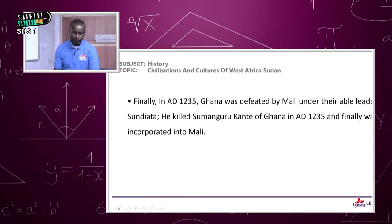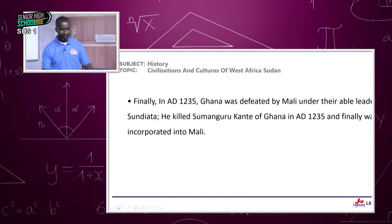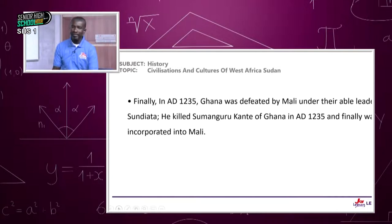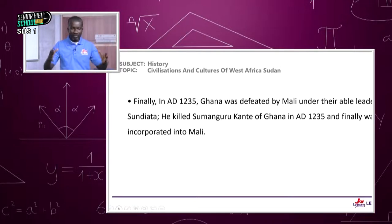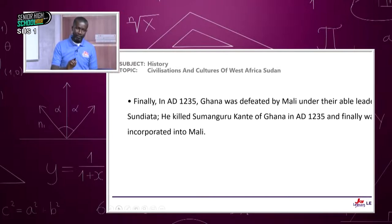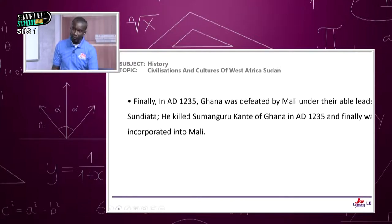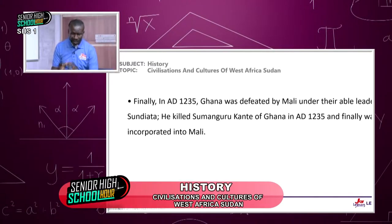By AD 1235, Ghana was defeated by Mali. Mali took over and became the second empire to emerge within the West Africa Sudan space after the fall of Ghana in 1235 AD. This happened during the Battle of Kirina, which saw the death of Sumanguru Kante.